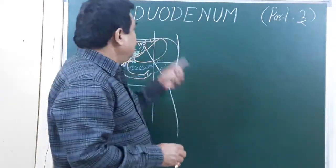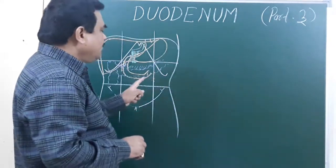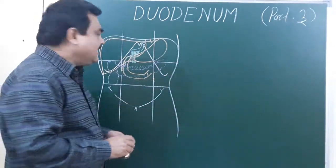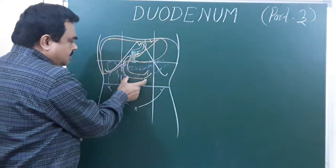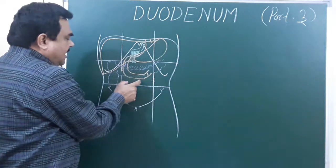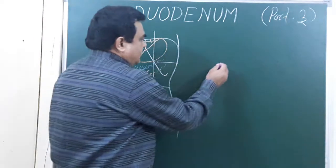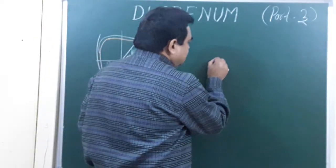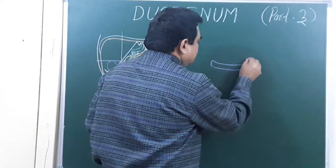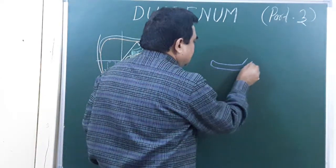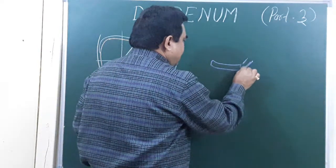We will discuss the third part of the duodenum. This is the third part of the duodenum; its length is about 4 inches or 10 centimeters. We will discuss the relations of this part — from here to here is the third part.